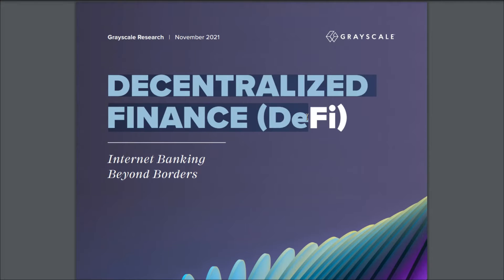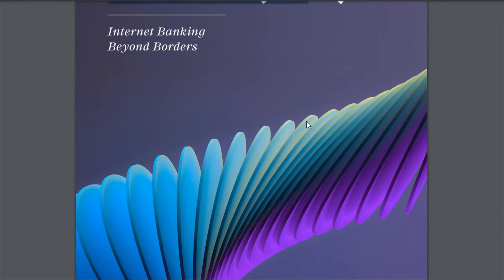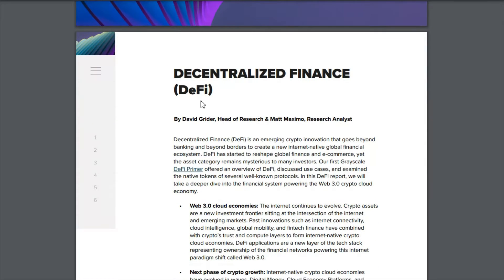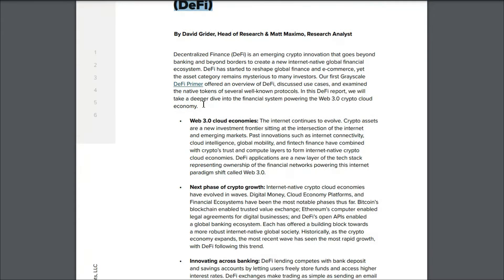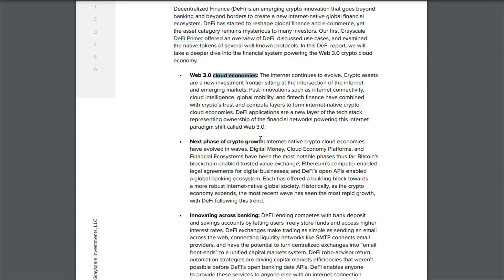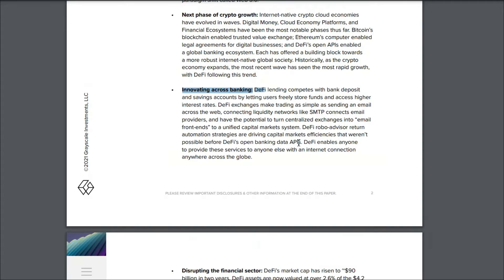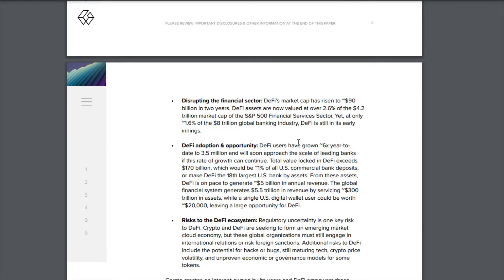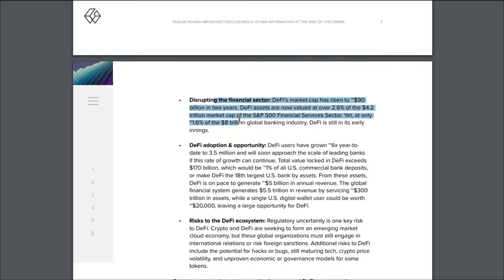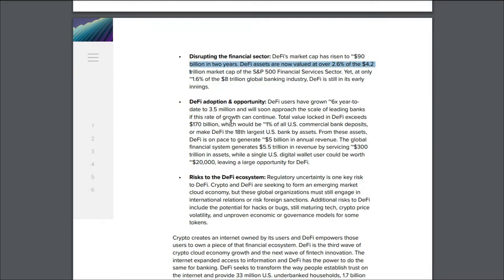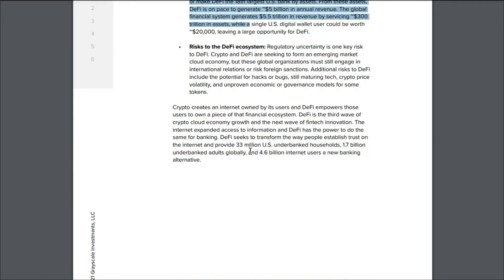The paper is on decentralized finance — how decentralized finance is going to shape the entire economy around the world. They have explained everything and shared all the stats. You can see they have explained decentralized finance, what is Web3, cloud economy, the next phase of crypto growth, and innovating across banking. This research paper was published in November 2021, and at that point you can see how many people were already involved in DeFi and how many transactions were happening every single month. I will share this entire report with all of you.